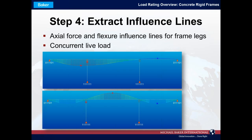For points at the top of the pier columns subject to combined axial force and flexure, we need to extract two influence lines and determine concurrent live loading. The top figure shows the influence line for axial force at the top of the left pier, and the lower figure shows the influence line for flexure at the same location. To determine the governing live load, we run whichever vehicles are being rated over these influence lines and compute concurrent force effects to determine the controlling rating.